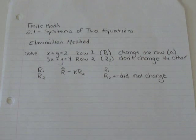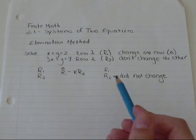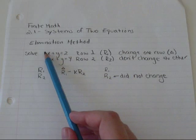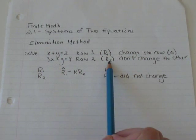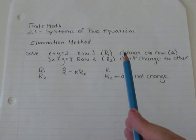Hi everyone. In this video, I'm going to show you how to use the elimination method to solve a system of two equations. So when you're using the elimination method, the first thing to do is to let one equation equal row one, one equation equal row two, and write them as one on top of the other.